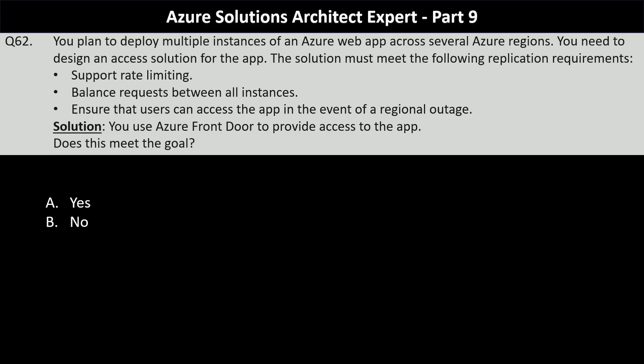Utilizing Azure Front Door is the correct solution. Azure Front Door combined with a Web Application Firewall policy will achieve all requirements. Azure Front Door balances requests across multiple regional instances of the web app, ensuring efficient distribution of traffic. It also allows you to configure rate limiting policies to manage traffic spikes and prevent abuse. In case of a regional outage, Front Door automatically redirects traffic to the next available healthy instance. It also performs health probes to monitor the status of each instance and routes traffic only to healthy endpoints.